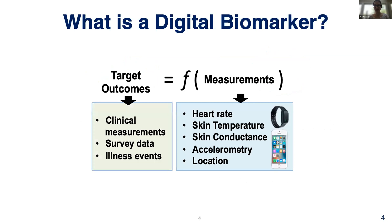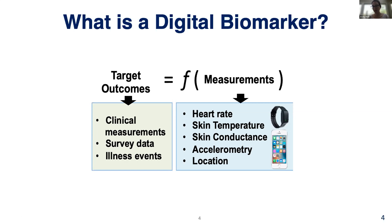The way that we actually design these digital biomarkers mathematically is that we develop some model where we have target outcomes — more common clinical measurements, perhaps measurements that exist in an electronic health record, survey data, or illness events reported by study participants — and we predict these as a function of these continuous signals. A lot of these continuous signals are optical signals, and that's the relation between this digital biomarker work and today's symposium.